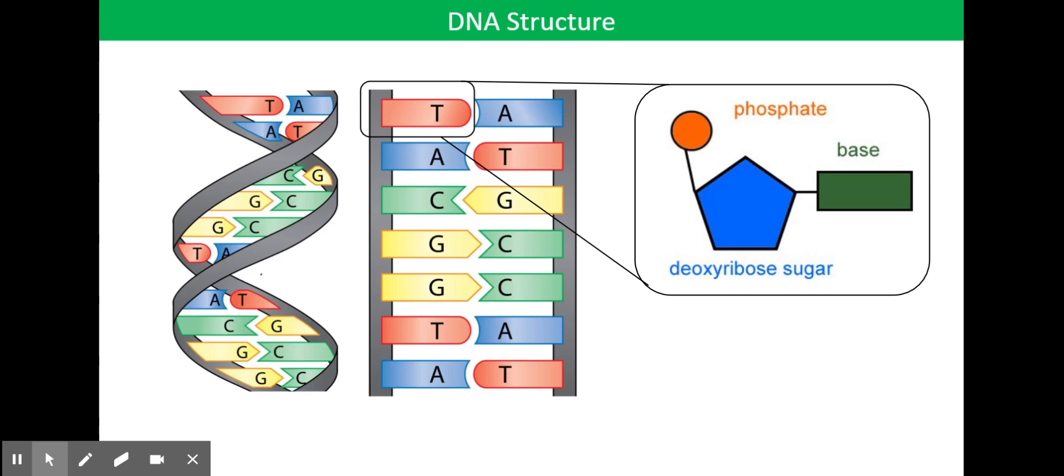However, what we can also see on this slide is if we've zoomed into that top left corner there, the T, the thymine, you can see that actually there's slightly more to it. Now all we've mentioned so far are the bases, which are like the rungs of the ladder, but actually the upright structures of the ladder are formed of sugar phosphates. So it's sometimes referred to as the sugar phosphate backbone.